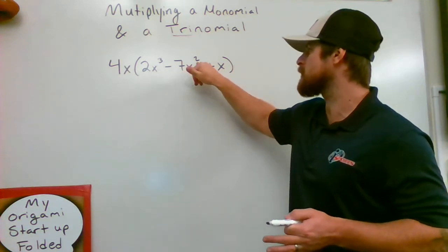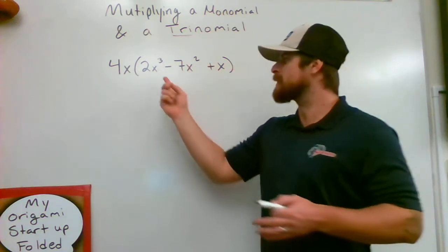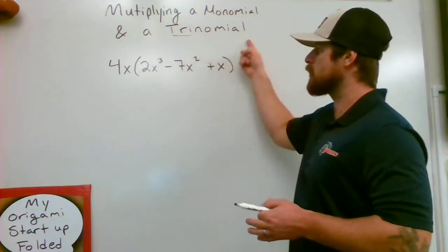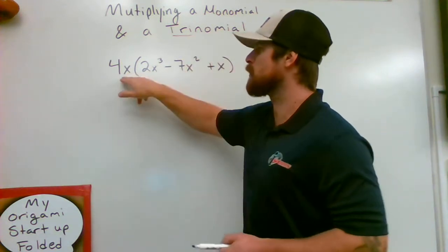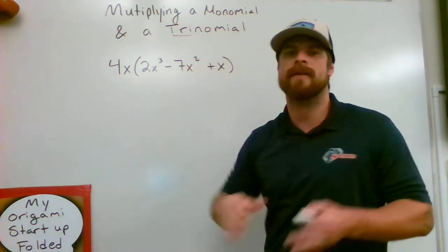2x cubed minus 7x squared plus x. So because there's three terms, we call that a trinomial, and all of this needs to be multiplied by this single term on the outside of 4x.